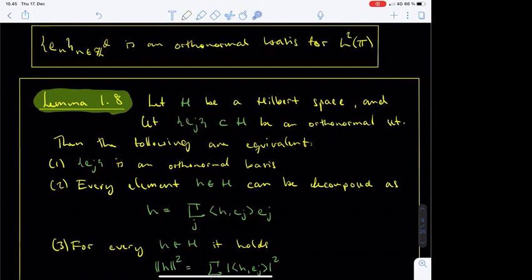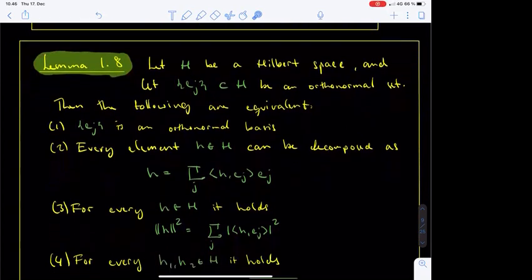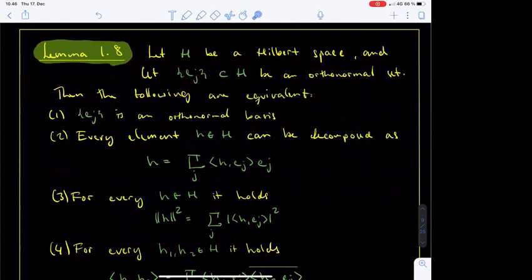Greetings! You are watching the third lecture of the course Introduction to Fourier Analysis. We are in the middle of proving that the complex exponential functions form an orthonormal basis in the space L2 of t, namely the space of 2pi periodic functions on Rd which are square integrable over the box t. The main accomplishment of the previous lecture was to show that the complex exponentials form an orthonormal sequence in L2 of t. What remains is to show that the complex exponentials, denoted by En, also form a basis. For this purpose, we concluded the previous lecture by stating Lemma 1.8, a criterion in general Hilbert spaces for verifying that an orthonormal sequence is also an orthonormal basis.